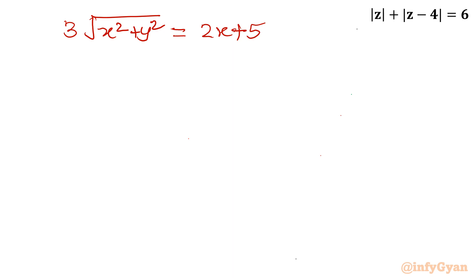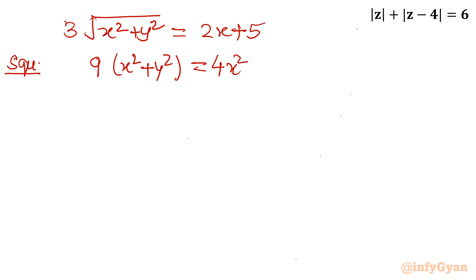Now you can see there is still a square root. So we will square both sides again. The left side becomes 9 times x squared plus y squared. The right side is 2x plus 5 whole squared, which expands to 4x squared plus 25 plus 20x.